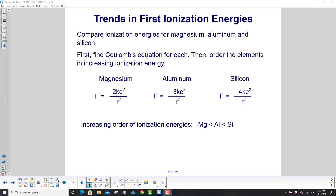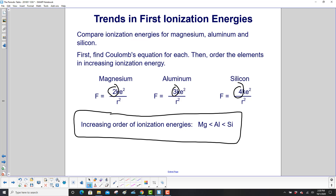Compare the ionization energies of magnesium, aluminum, and silicon. First, find Coulomb's equation for each, making sure to account for effective nuclear charge — which for magnesium is 2, aluminum is 3, and silicon is 4. Then order the elements in increasing ionization energy, from smaller force to greater force. The increasing order is magnesium < aluminum < silicon. Silicon holds onto its valence electrons a lot stronger because of the greater force between its nucleus and valence electrons. The least ionization energy is magnesium, then aluminum, and silicon holds on to those valence electrons the most.